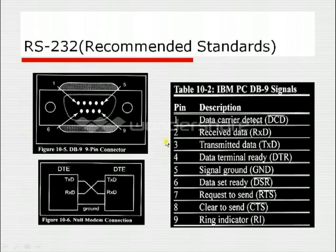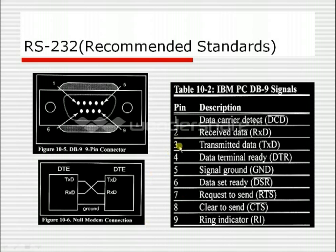RS232 specifies nine signals: Data Carrier Detect, Receive Data, Transmitted Data, Data Terminal Ready, Signal Ground, Data Set Ready, Request to Send, Clear to Send, and Ring Indicator. In asynchronous serial communication, we use only three of these pins: Receive Data (RXD), Transmit Data (TXD), and Signal Ground.